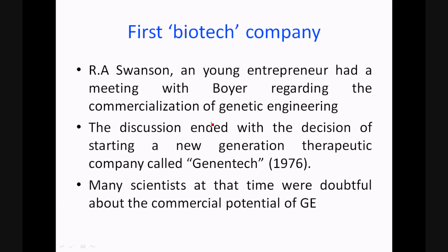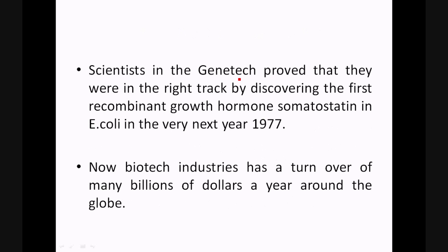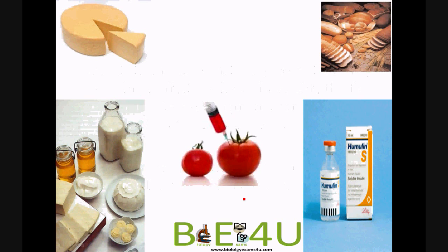Later, Robert Swanson, a young entrepreneur, had a meeting with Boyer regarding the convincing feasibility of recombinant DNA technology. The discussion ended with the decision to start a new biotechnology company called Genentech. Many scientists at that time were doubtful about recombinant DNA technology, but scientists at Genentech proved their detractors wrong by producing the first recombinant growth hormone, somatostatin, in E. coli the very next year, 1977. Now there are thousands of biotech industries all around the globe generating many billions of dollars a year.